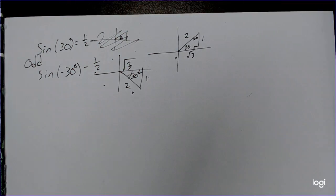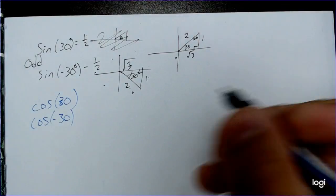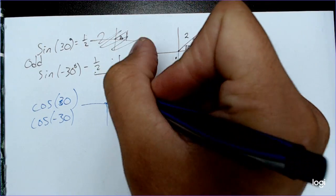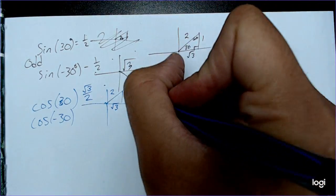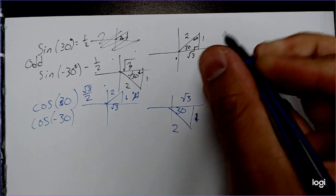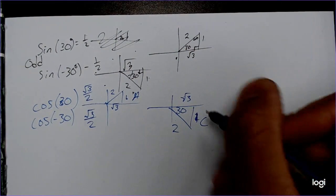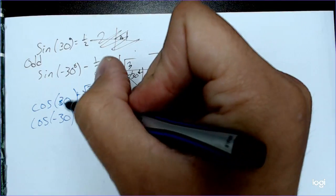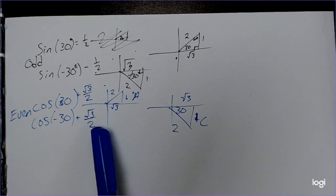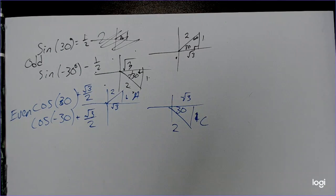What about cosine? Is cosine an odd function? Let's test cosine for the same values. Cosine of 30 gives us root 3 over 2 — positive, since all are positive in the first quadrant. Now for negative 30 in the fourth quadrant, the adjacent side is root 3 over 2, and cosine is positive in the fourth quadrant. So we get positive root 3 over 2 both times. Since we have the same answer for the positive and negative version, cosine is an even function. Algebraically, even functions give the same answer for positive and negative input; odd functions give opposite answers.